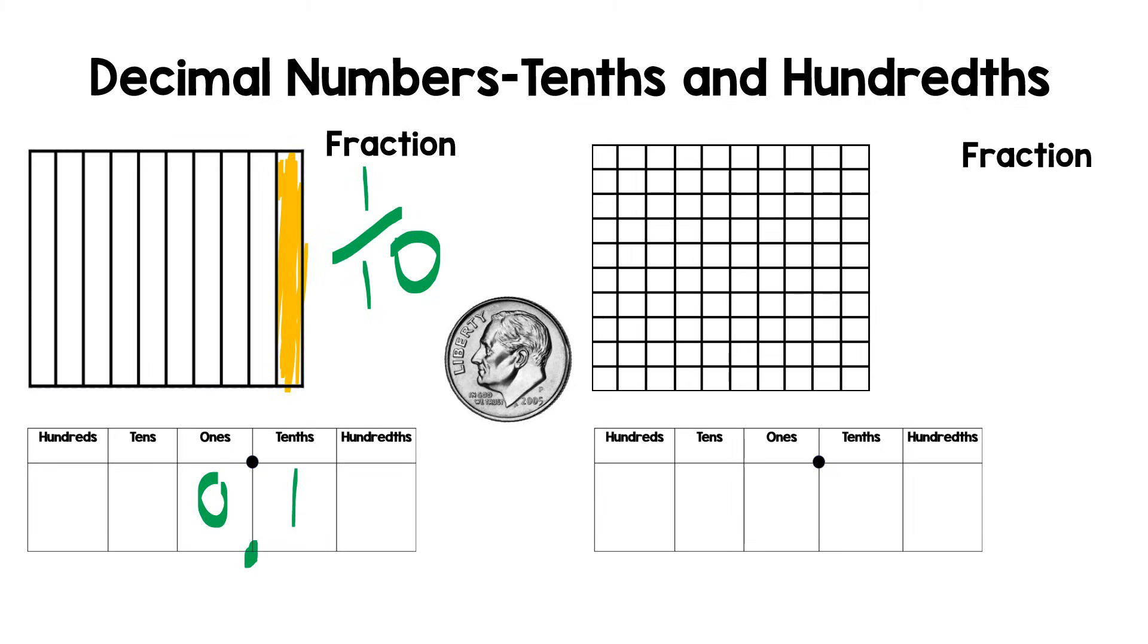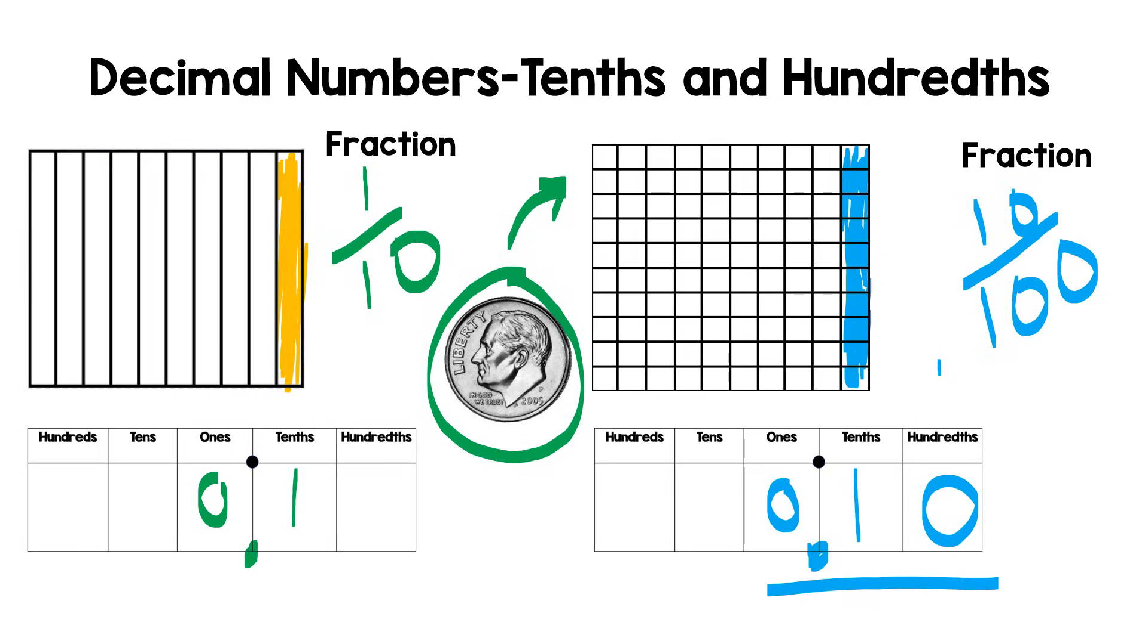Now if I were to take this same dime and put it in this grid, I would shade ten parts because a dime is actually ten pennies. And I'm going to put this as ten out of one hundred. And if I were to write that on the place value chart, it's pretty much the same. I can have zero ones, my decimal, and ten out of one hundred. So as you can see, on this one I have a zero in the hundredths place. In this one I have no zeros or anything in the hundredths place. It's just one tenth, but these are actually equivalent. They equal the same thing.